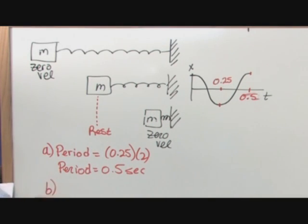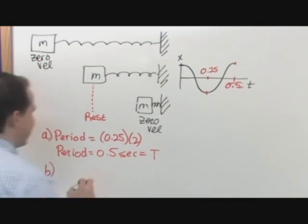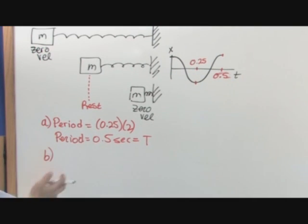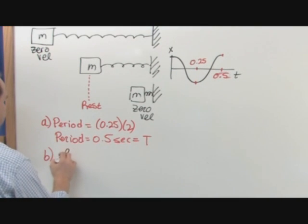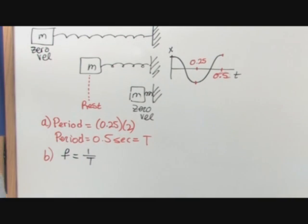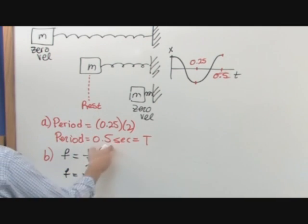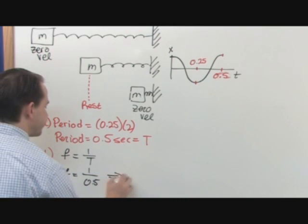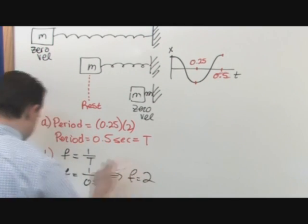So part b, we want to find out what is the frequency. So we found the period, which was always labeled T. It's very simple once you know the period to find the frequency. The frequency is always 1 over T. That's a formula, an equation that we had in the last section when we talked about all this stuff. You always know the frequency when you have the period and vice versa. So all you do literally is just take 1 over T, which we found to be 0.5. So the frequency is 2.